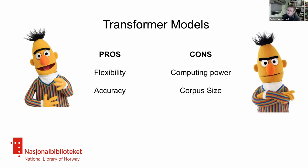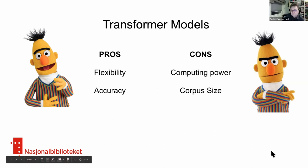However, there are some negative sides here as well. The computing power for training the base model is very large — it's basically impossible to train on a single GPU at home. Fine-tuned models are a lot easier. It also requires quite a large corpus — a colossal corpus. I'll tell you a bit more about how large a corpus it requires later.